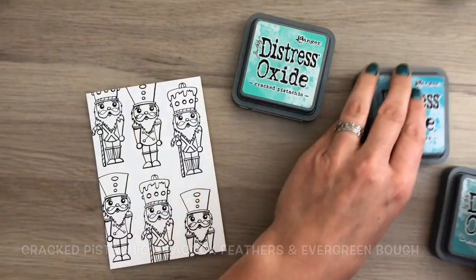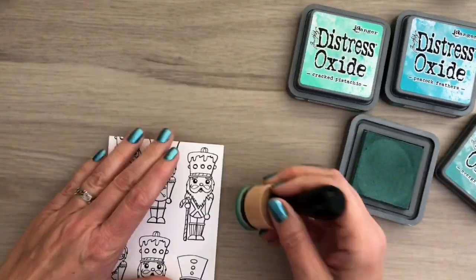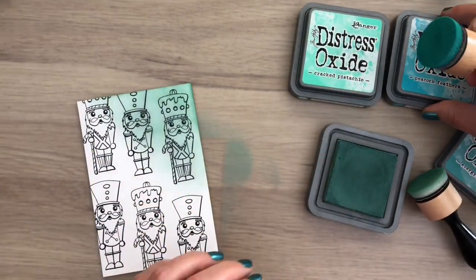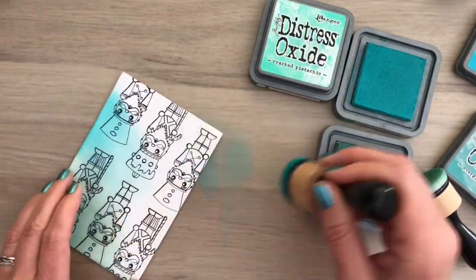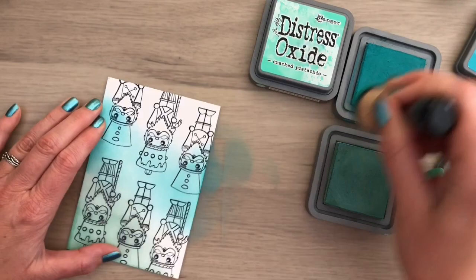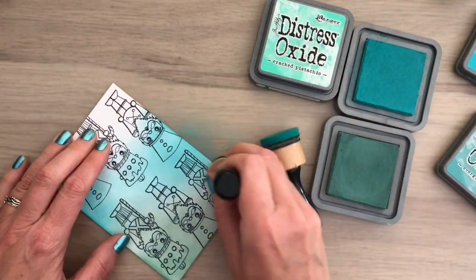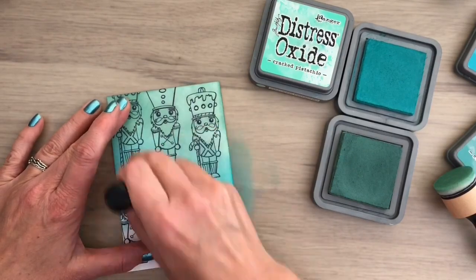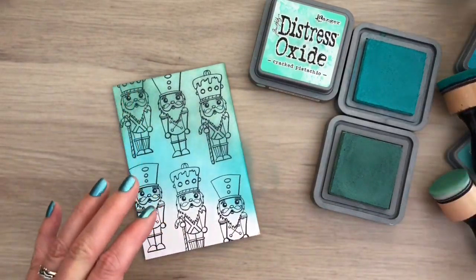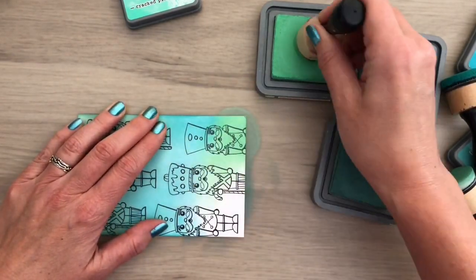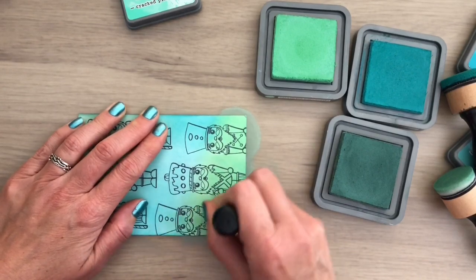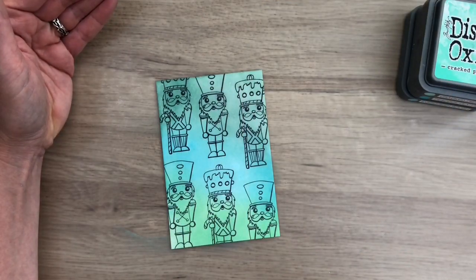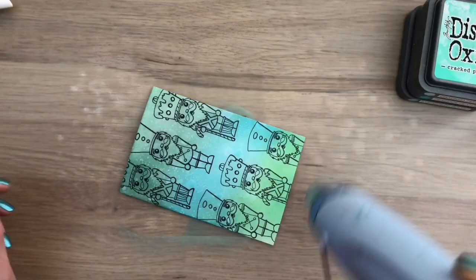Color the card with three colors Distress Oxide ink, the same like I did for the first cards but then in red. Just adding three colors ink and blending. Now I'm going to spray some water drops to get a more distressed result. And I use the heat tool to dry the card.